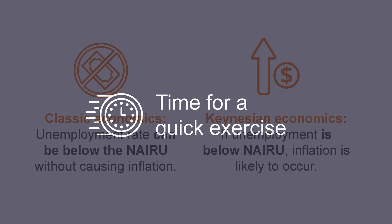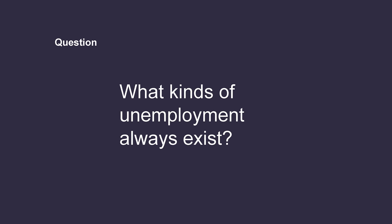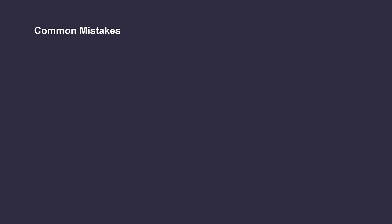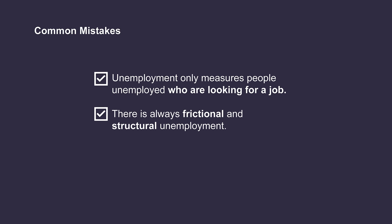It's time for a quick exercise. We've talked a lot about unemployment — what kinds of unemployment always exist when we are talking about long-term growth? If you answered structural or frictional unemployment, you're correct. Remember, the unemployment rate is never zero. The most common mistakes: first, remember that unemployment measures people who are unemployed and actively looking for a job — people not employed and not looking are not counted. Also, even though the natural rate of unemployment refers to full employment and an ideal real GDP, this does not mean there are no people without jobs. There is always frictional and structural unemployment.